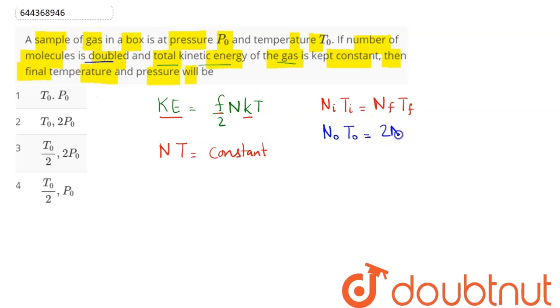doubled (2N₀), hence final temperature T_f can be written as T₀/2. So final temperature is T₀/2. Options 1 and 2 are incorrect. Now coming